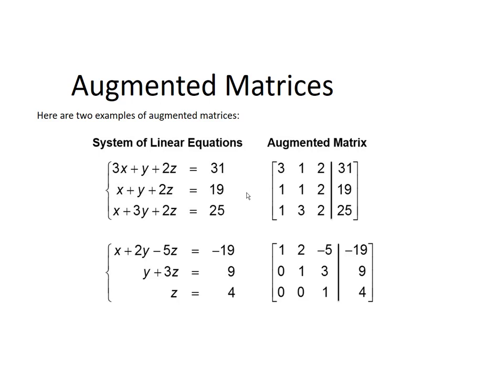The second equation of our system is y plus 3z equals 9, which means we have a second row of 0 because there's a missing x term, 1, 3, 9.